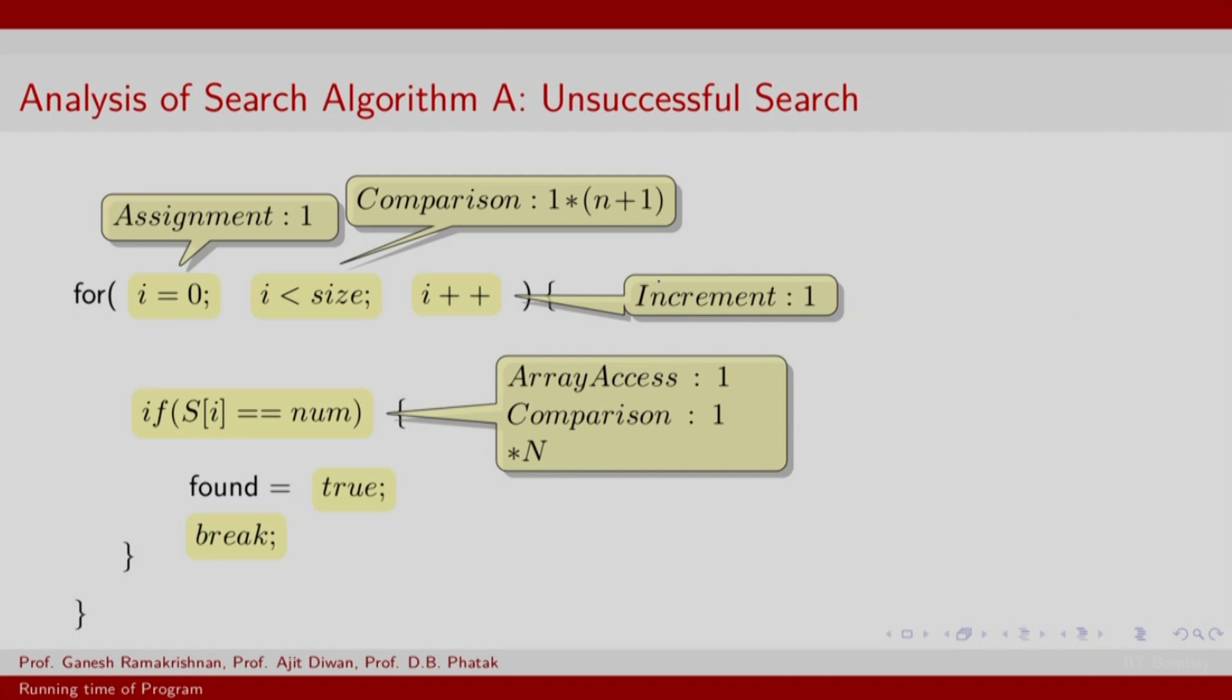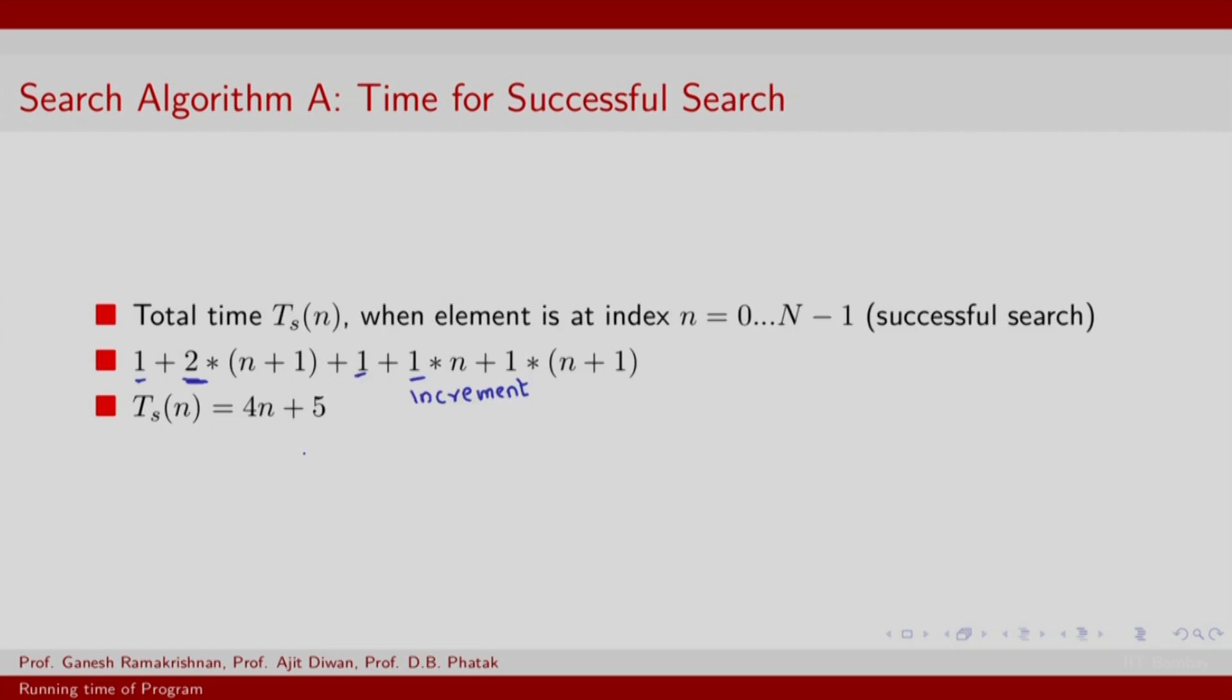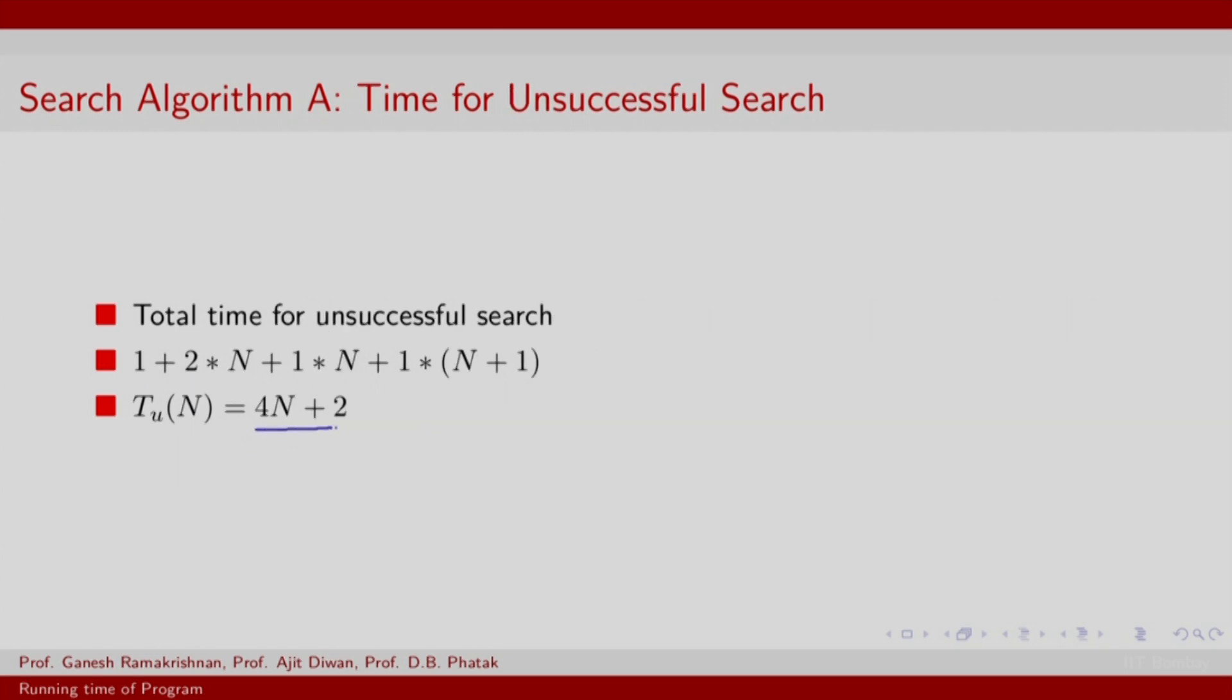How about an unsuccessful search? Which means you actually had to go until the end of the sequence s. So, in such a case, you would never come across the found and break statements. So, you will have to do this until the end to increment the array access and the comparison. So, the cost incurred here is basically 4n plus 2. So, please note the comparison here is between 4 times small n plus 5 and 4 times capital n plus 2.